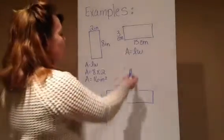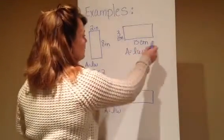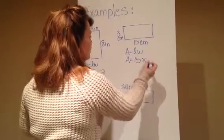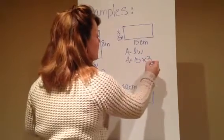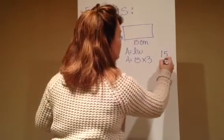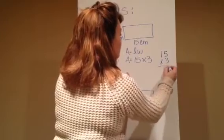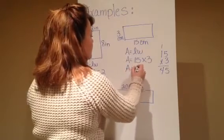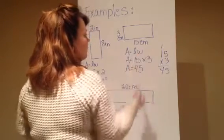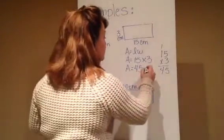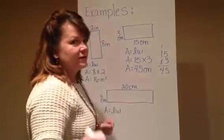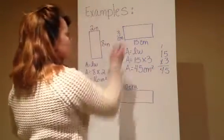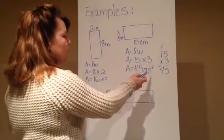Let's take a look at the next one. I have my formula already written down. My length or my long side is 15, multiply times 3 which is my width, and I'm going to multiply that out over here. I get 45, and my unit for this one is centimeters, centimeters squared. Don't forget. So my area for this rectangle is 45 centimeters squared.